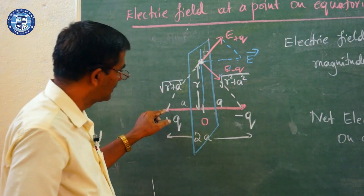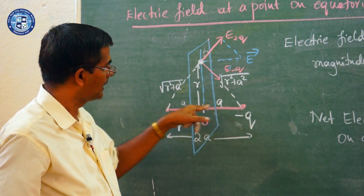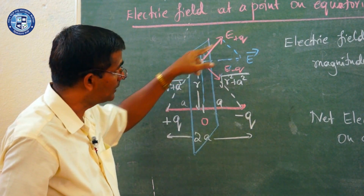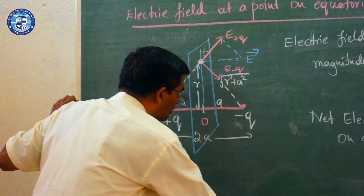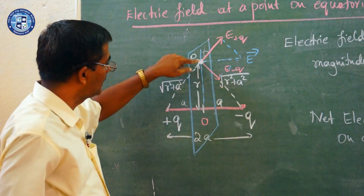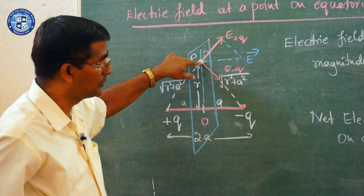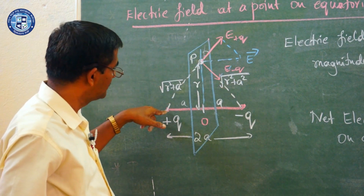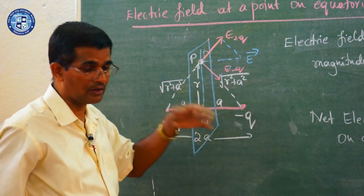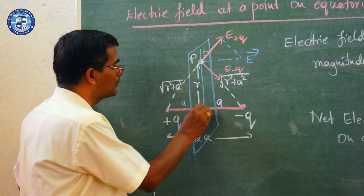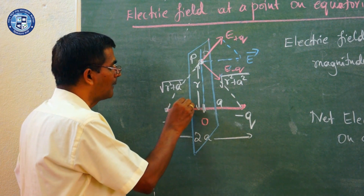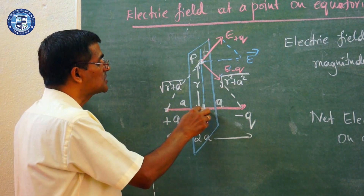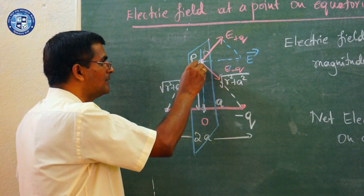Suppose I have a dipole with +q and -q separated by distance 2a, and O is the center of this dipole. A plane passing through this center and perpendicular to the axis is called the equatorial plane. I have a point P on this equatorial plane. The distance from the positive charge to the center is a, and from the negative charge to the center is also a. The distance from the center of the dipole to point P is r.